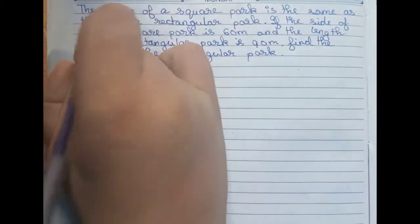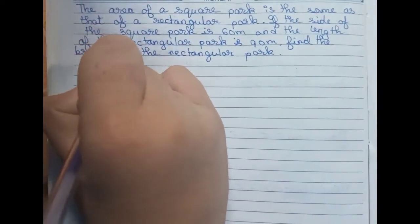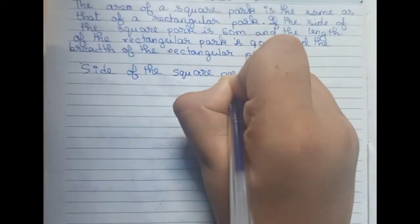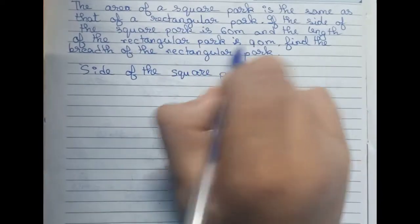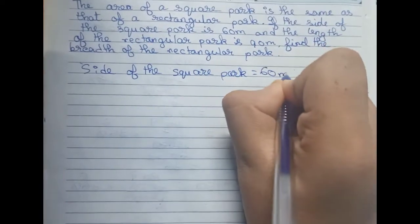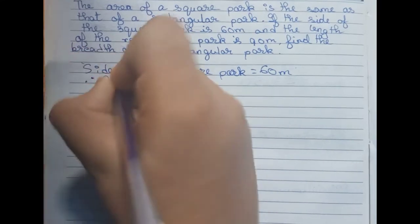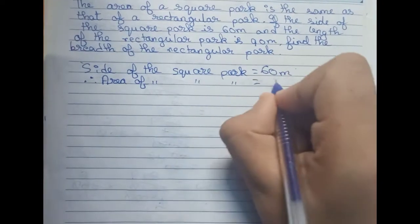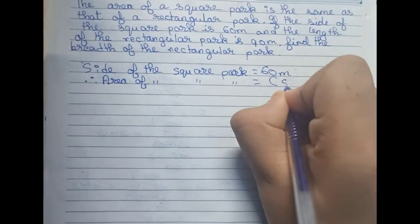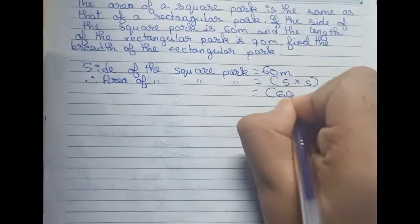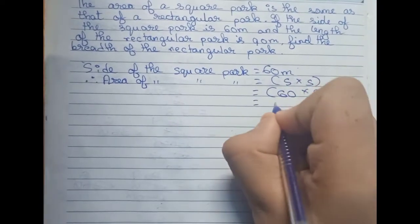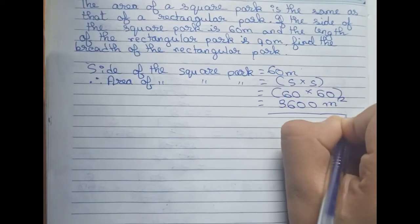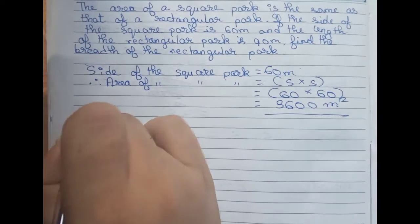First, the side of the square park equals 60 meters, as given in the question. Therefore, we find the area of the square park. The area formula is side into side, which becomes 60 into 60, so it becomes 3600 meter square. This is the area of our square park.